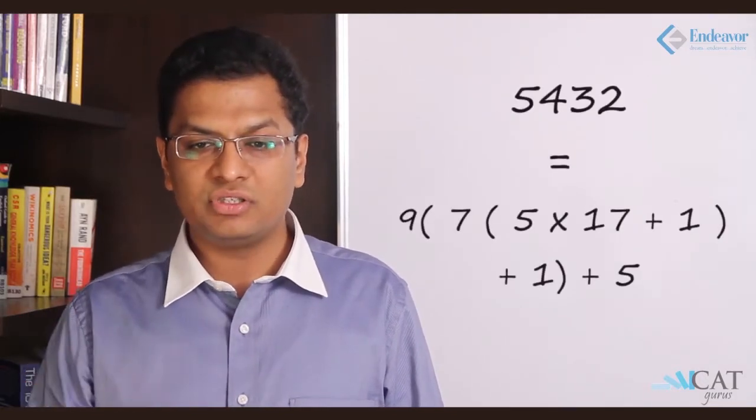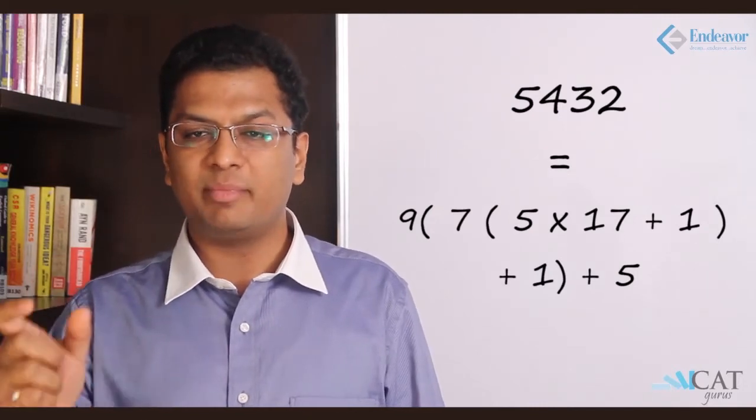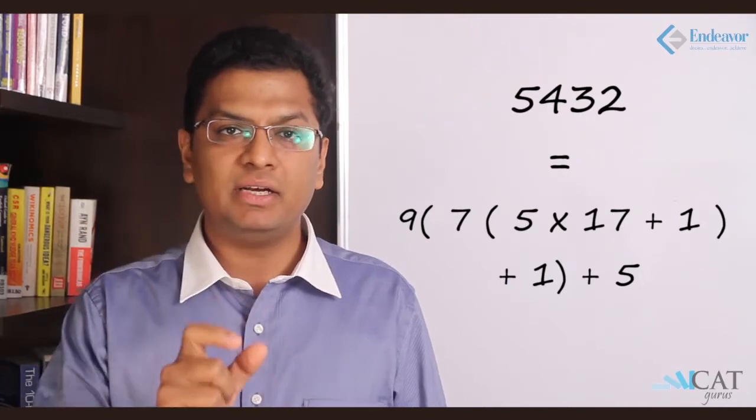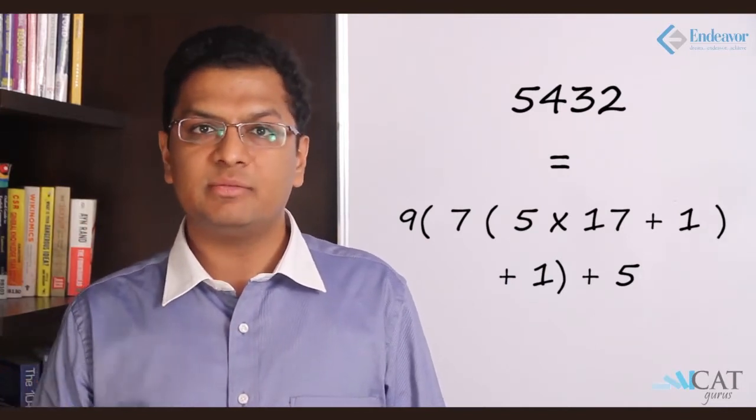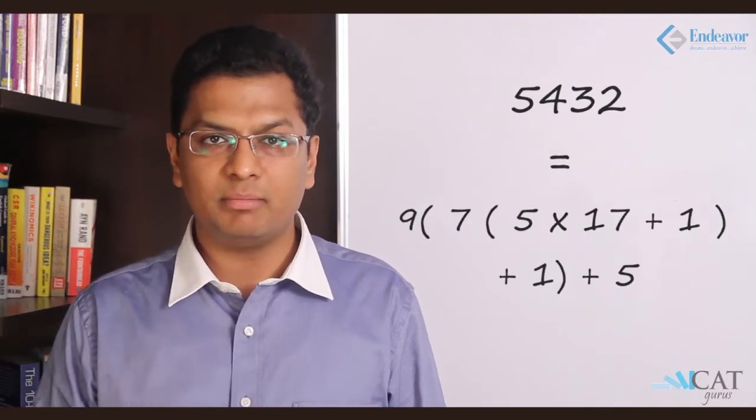Let us put it into the formula that we discussed. Innermost is 17 into 5 plus 1. So that becomes 86. This is multiplied by 7 plus 1 and this is multiplied by 9 plus 5. So this gives me the original number.